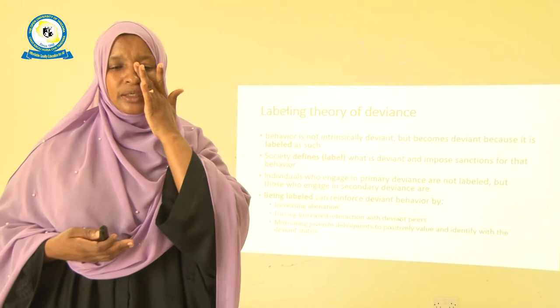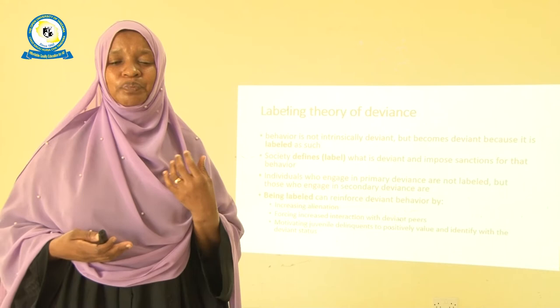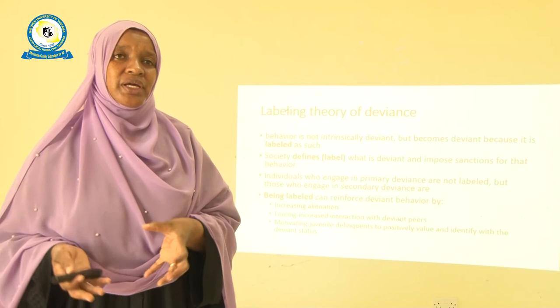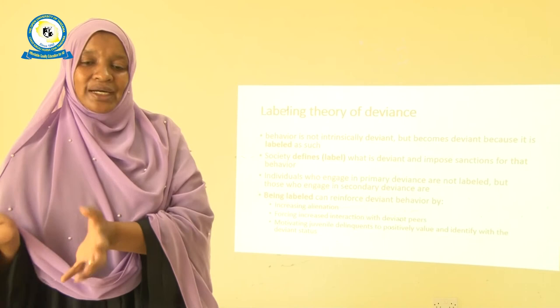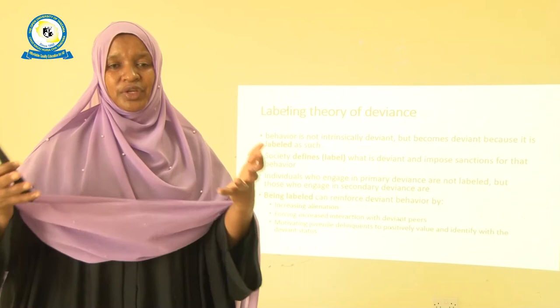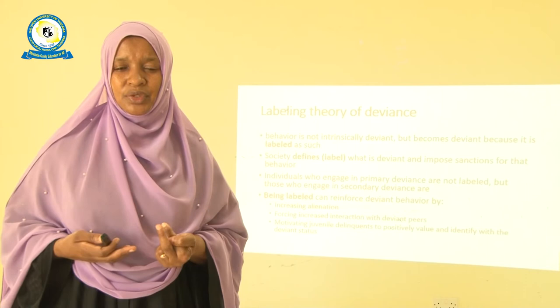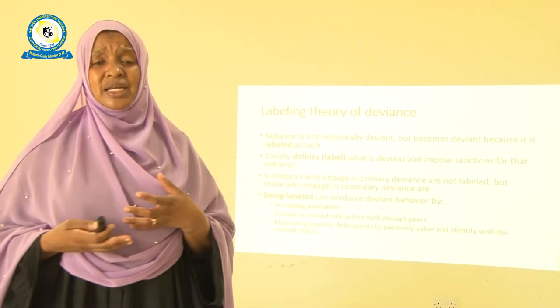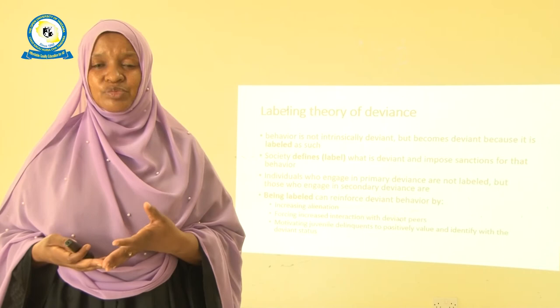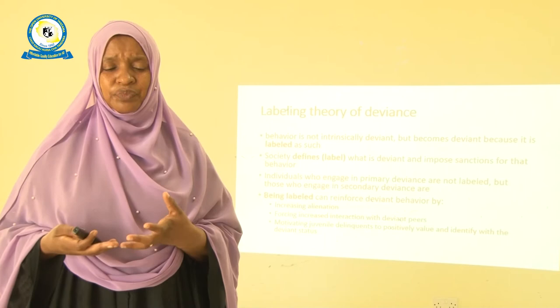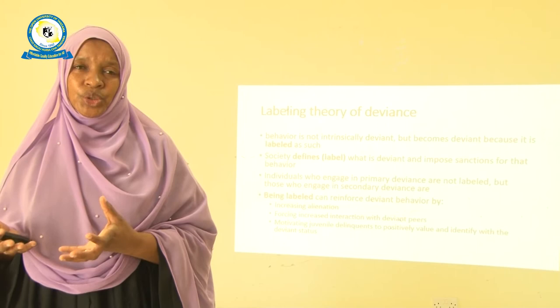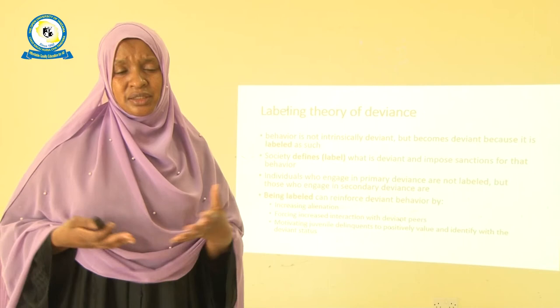The labeling theory also says that labeling reinforces deviance by forcing interaction with deviant peers — because those labeled now have a group or clique, they form a bond and continue with their deviant behavior. Finally, especially for juveniles, this creates an opportunity to form a certain value system and uphold deviant status as something different. During the period of developing individual recognition, sometimes people tend to do things that society does not necessarily accept.